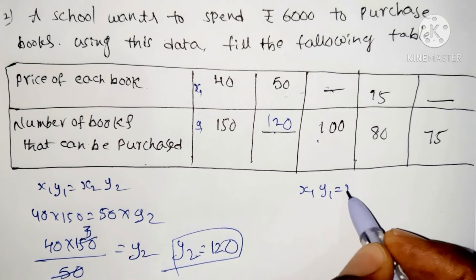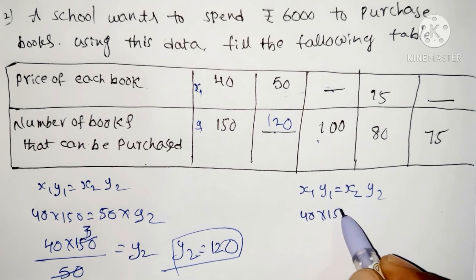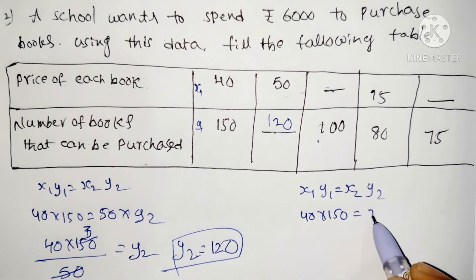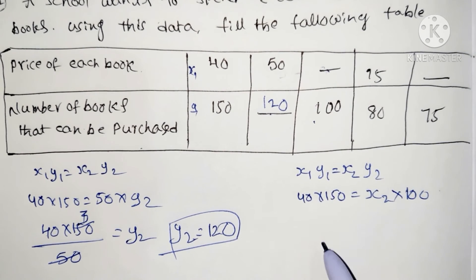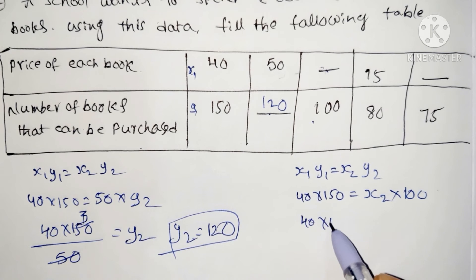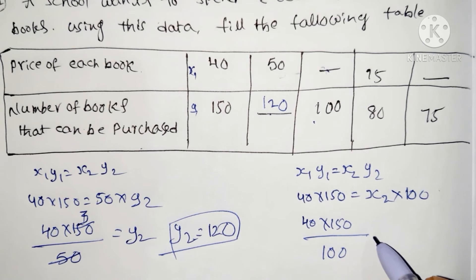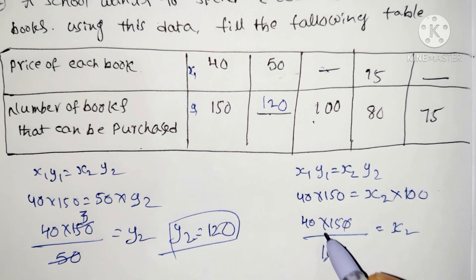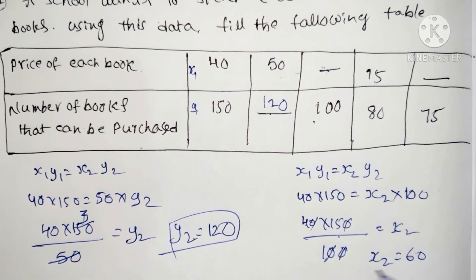Using x1 y1 = x2 y2: x1 is 40, y1 is 150, and y2 is equal to 100. So 40 into 150 equals x2 into 100. Cancelling and simplifying, x2 is equal to 40 into 150 divided by 100, giving x2 equal to 60.